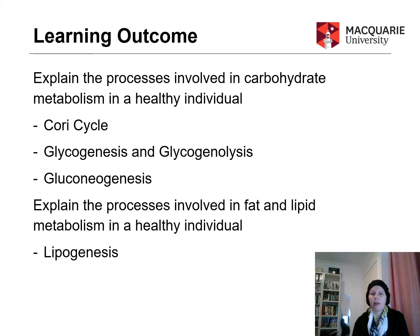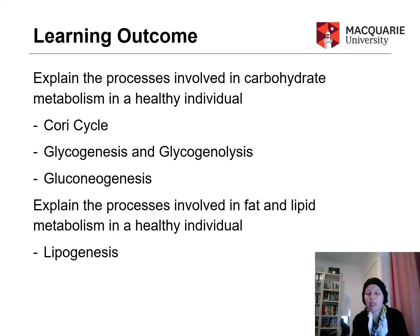The learning outcome for this video is really summarizing some of the other learning outcomes that we've already looked at. We're going to explain the processes involved in carbohydrate metabolism in a healthy individual, but in doing that we're going to touch on those pathways just mentioned: Cori cycle, glycogenesis and glycogenolysis, gluconeogenesis. We'll also explain the processes involved in fat metabolism in a healthy individual by touching on lipogenesis.